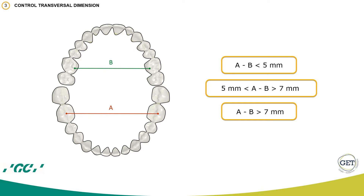This is relatively easy to do. You have to measure the distance between the mesolingual cusp of the upper first molars and the central fossa of the lower first molars, because in normal occlusion the mesolingual cusp of the upper first molar occludes in the central fossa of the lower molar.